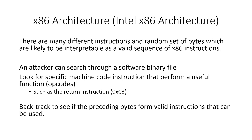There are many different instructions and random bytes which are likely to be interpreted as valid sequences of instructions. An attacker can search through a software binary file, look for specific machine code instructions, and perform a useful function such as the return instruction, then backtrace to see if the preceding bytes form a valid instruction that can be used.